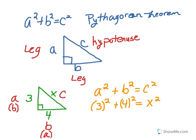So we write 3 squared plus 4 squared equals x squared. Please copy this in your notes. Pause the video if you need to.